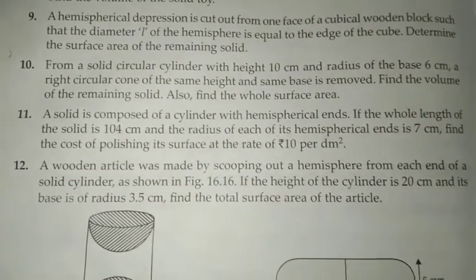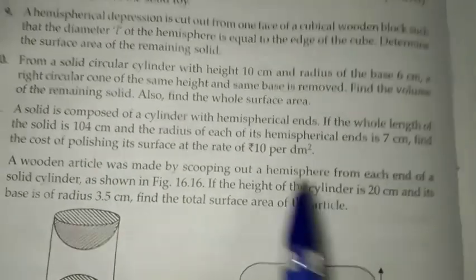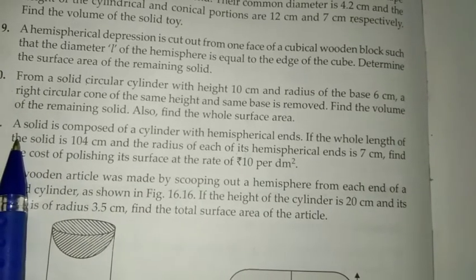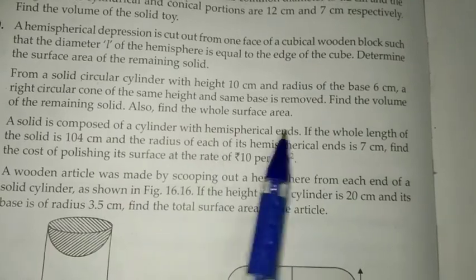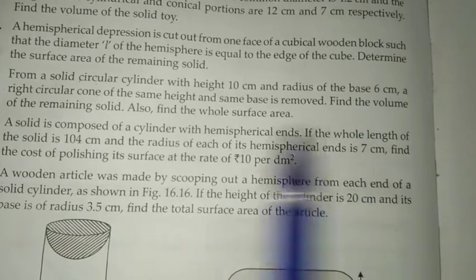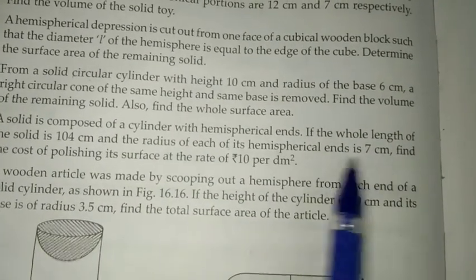It says a solid is composed of a cylinder with hemispherical ends. If the whole length of the solid is 104 centimeters and the radius of each of its hemispherical ends is 7 centimeters, find the cost of polishing its surface at the rate of rupees 10 per decimeter square.